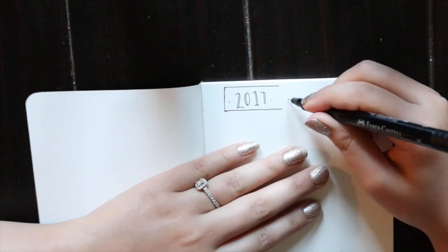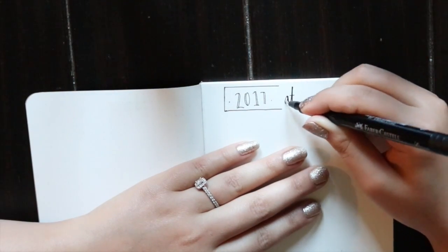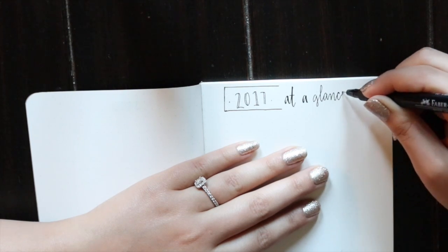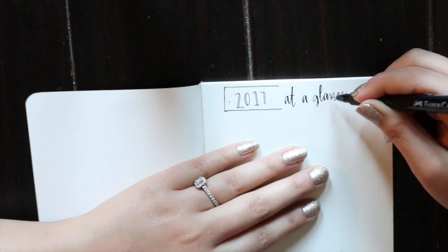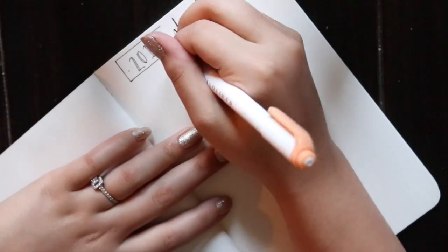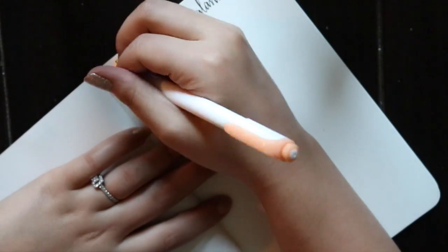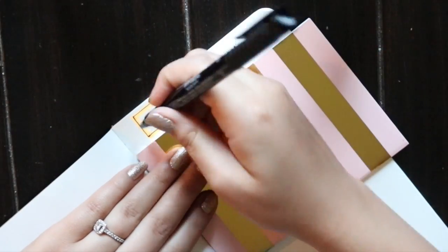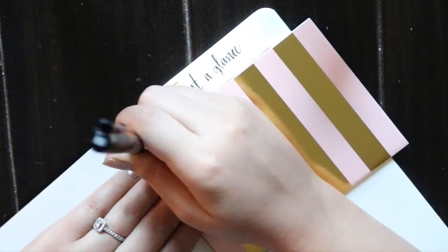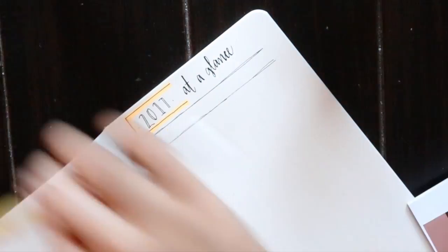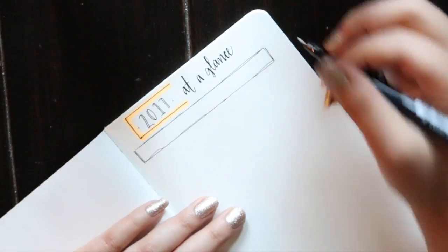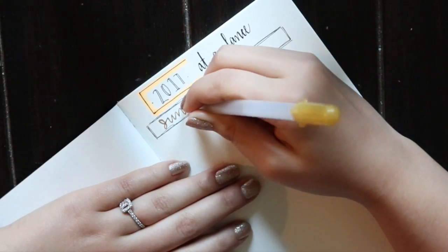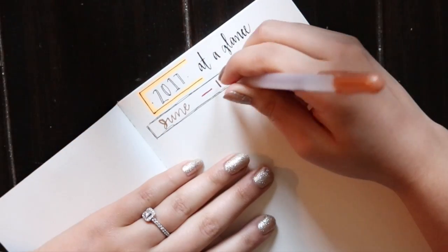This book is a little bit smaller than the really popular Leuchtturm 1917 journal, so I figured that it would be better to use a smaller period of time to track in this book. I do want to tell you that this is my first bullet journaling video and I'll be the first to say that it is far from perfect. I did keep it simple, but I plan on being really creative in the future and I'm definitely going to be making more journaling videos and have a lot of fun with it.